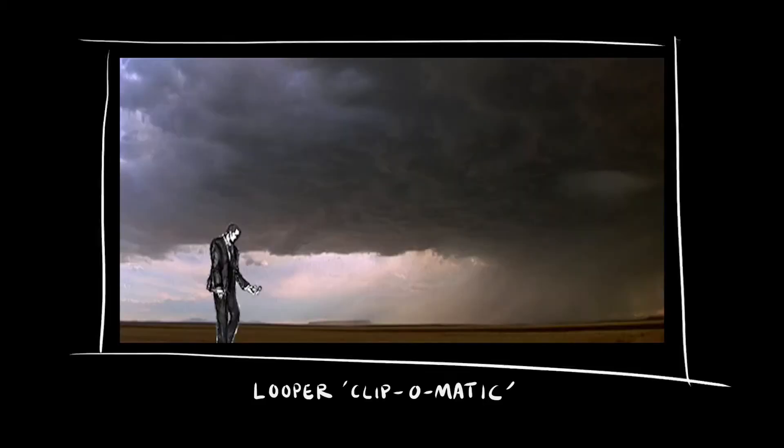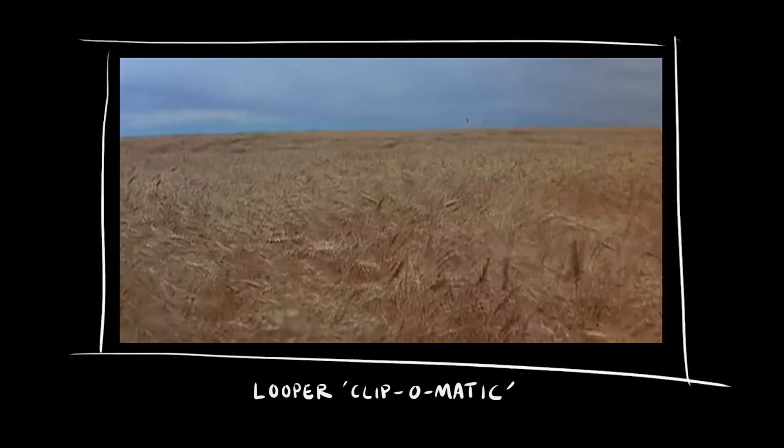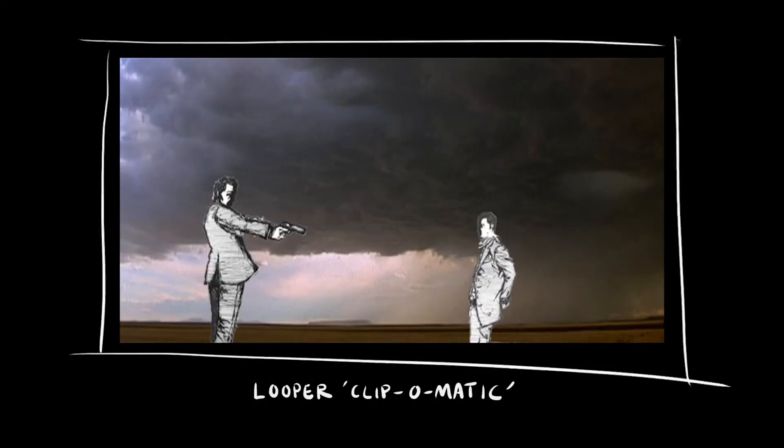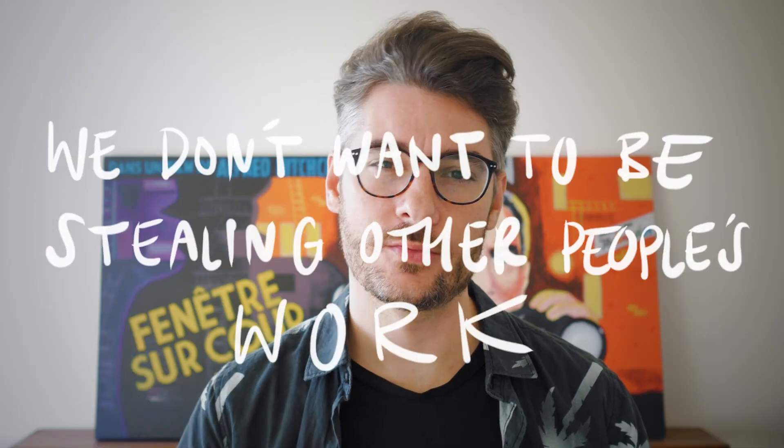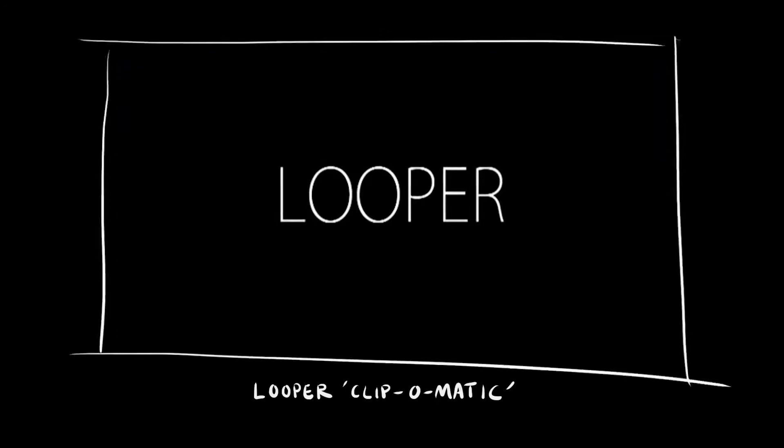It's not just indie filmmakers doing this. Rian Johnson, who directed The Last Jedi, made one for Looper back in the day — it's online on Vimeo. He calls it a clip-o-matic, and what he did was take footage from Seven, Twelve Monkeys, and a lot of other films. Similar to a disclaimer I added in pitch documents — I understand we don't want to be stealing other people's work. Rian Johnson initially showed the Looper clip-o-matic privately to pitch his movie, and has since put it online for educational purposes. That's what I'm trying to do here too — I really value the work of original filmmakers and am against piracy.